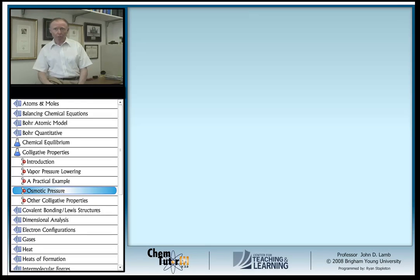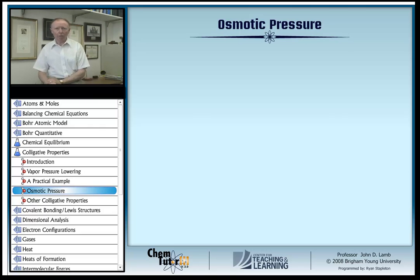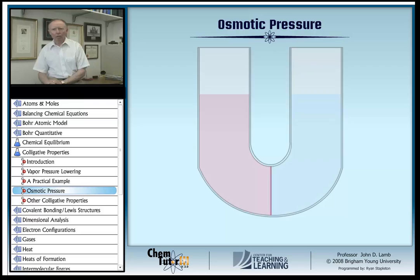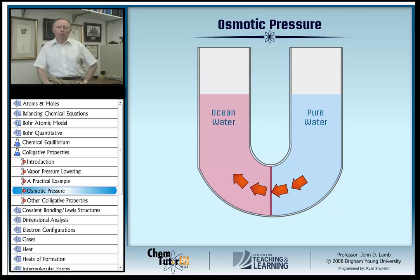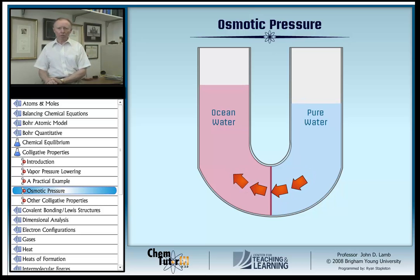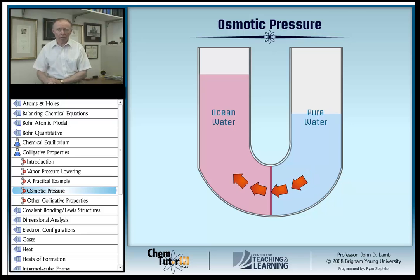There's another colligative property I'd like to introduce: osmotic pressure. This is the pressure that occurs across membranes, like cell membranes, between water solutions of different concentrations. Here's an example: we have a membrane that separates two water phases — one pure water and the other ocean water, which is about half molar sodium chloride. This particular membrane allows only water molecules to pass through. Without any encouragement, water will pass through the membrane from the pure water side into the sea water with a certain pressure.